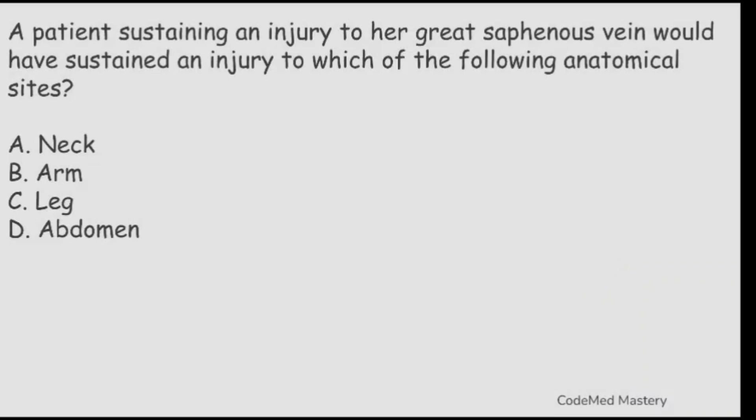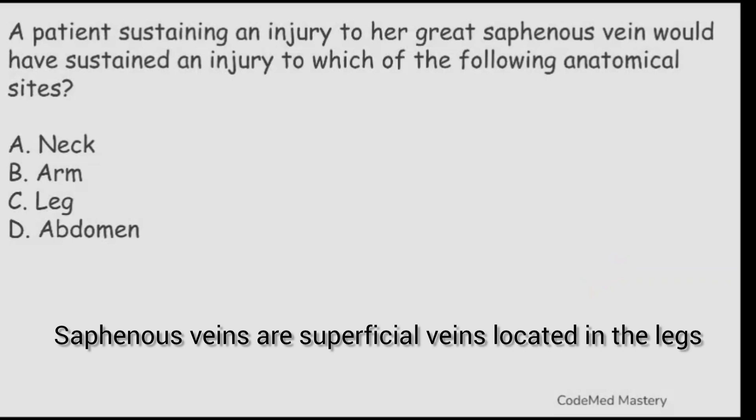Next question: a patient sustaining an injury to her great saphenous vein would have sustained an injury to which anatomical site? Option A: neck. Option B: arm. Option C: leg. Option D: abdomen. To answer this, you need to know that saphenous veins are superficial veins located in your legs, so the right answer is option C, leg.